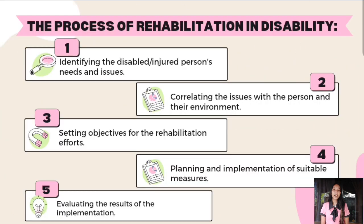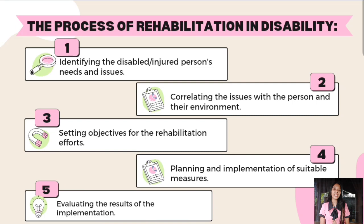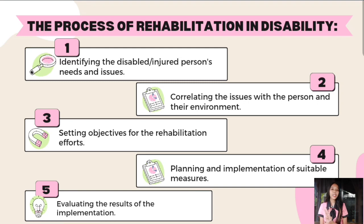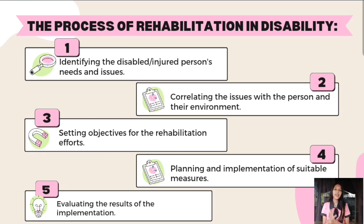The process of rehabilitation in disability: first, identifying the disabled or injured person's needs and issues; second, correlating the issues with the person and their environment; third, setting objectives for rehabilitation efforts; fourth, planning and implementation of suitable measures; and fifth, evaluating the results of the implementation.